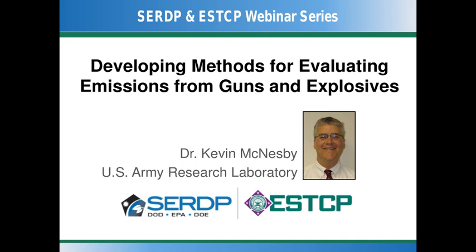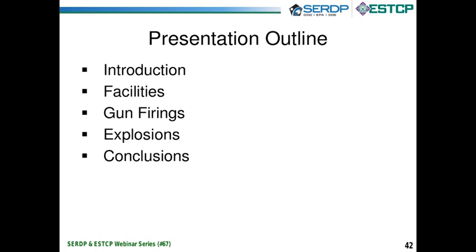Thank you. This is Kevin McNesby. I'm speaking from the U.S. Army Research Laboratory at Aberdeen Proving Ground in Maryland, about 40 miles north of Baltimore. I'm going to be talking today about developing methods for evaluating emissions from guns and explosives, with a concentration on metallized energetic materials. I'll provide an introduction, talk about the facilities we use, and then get to the two main topics — gun firings and explosions — and then discuss some conclusions.